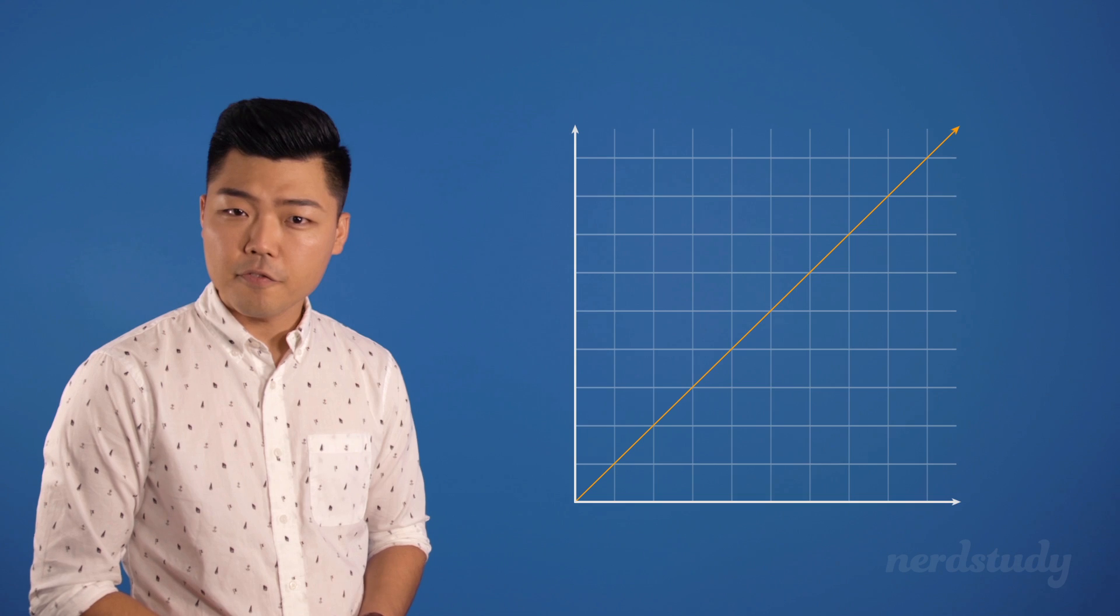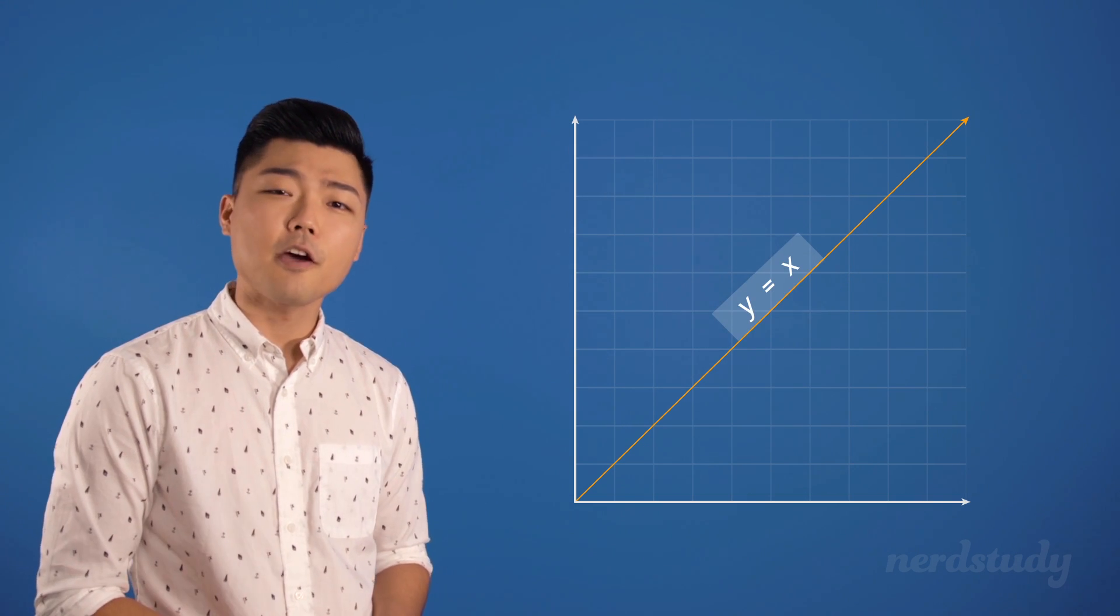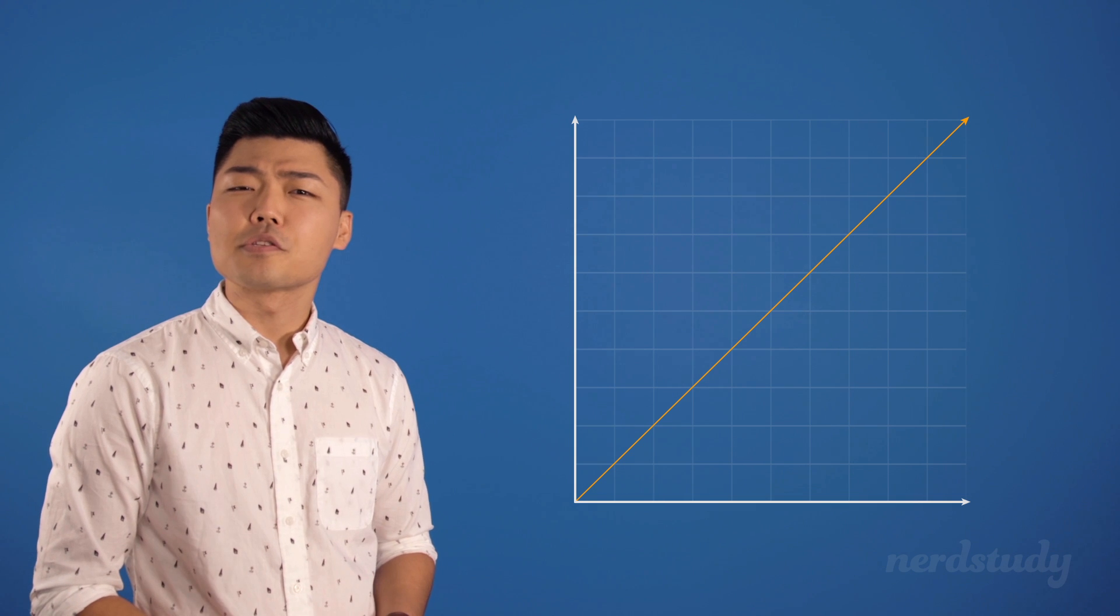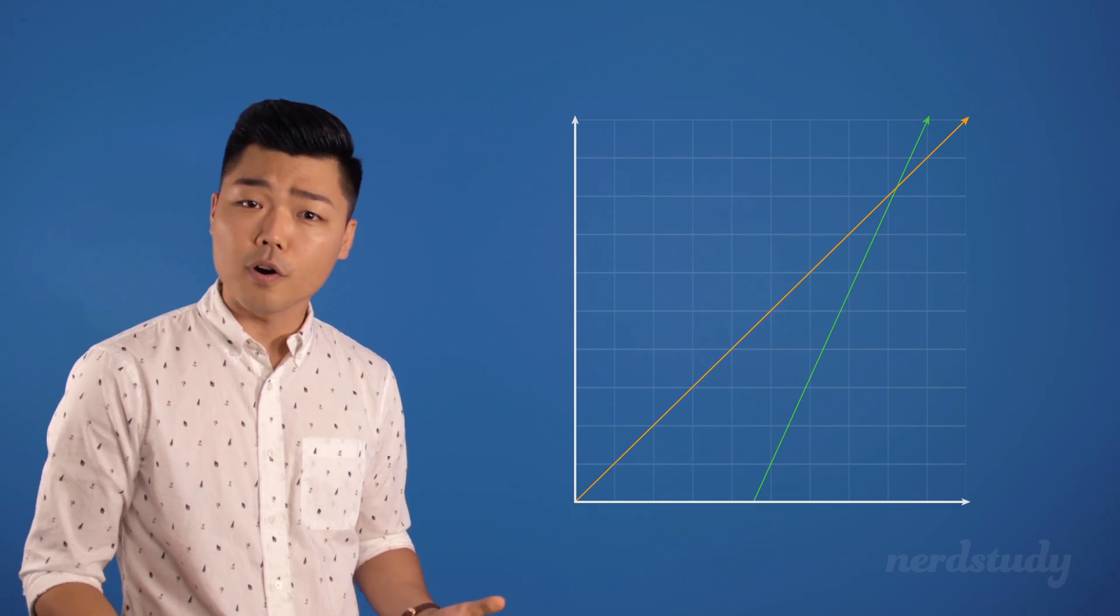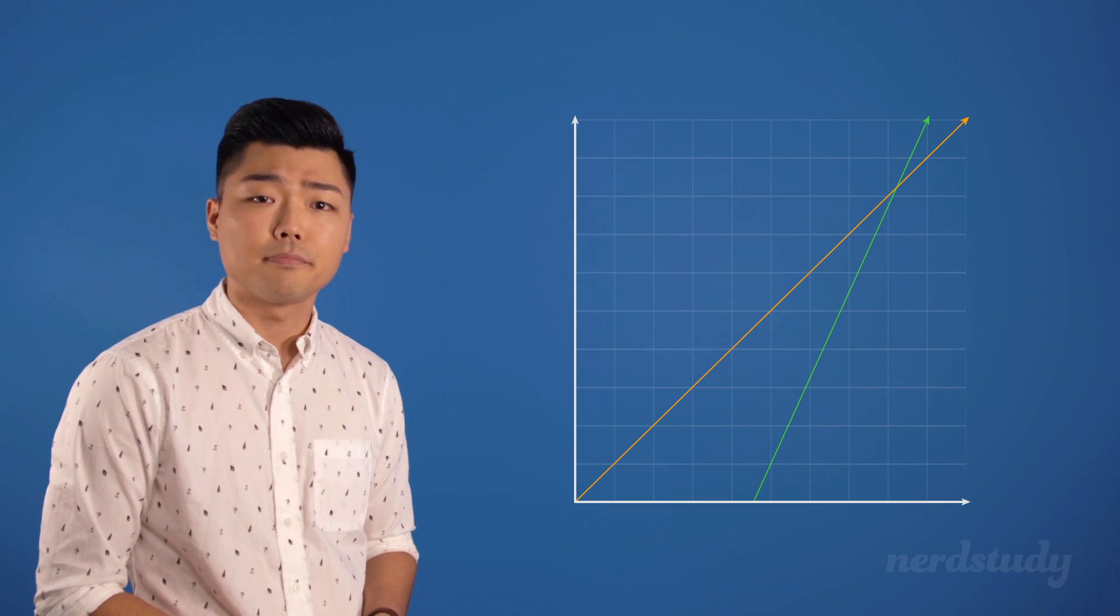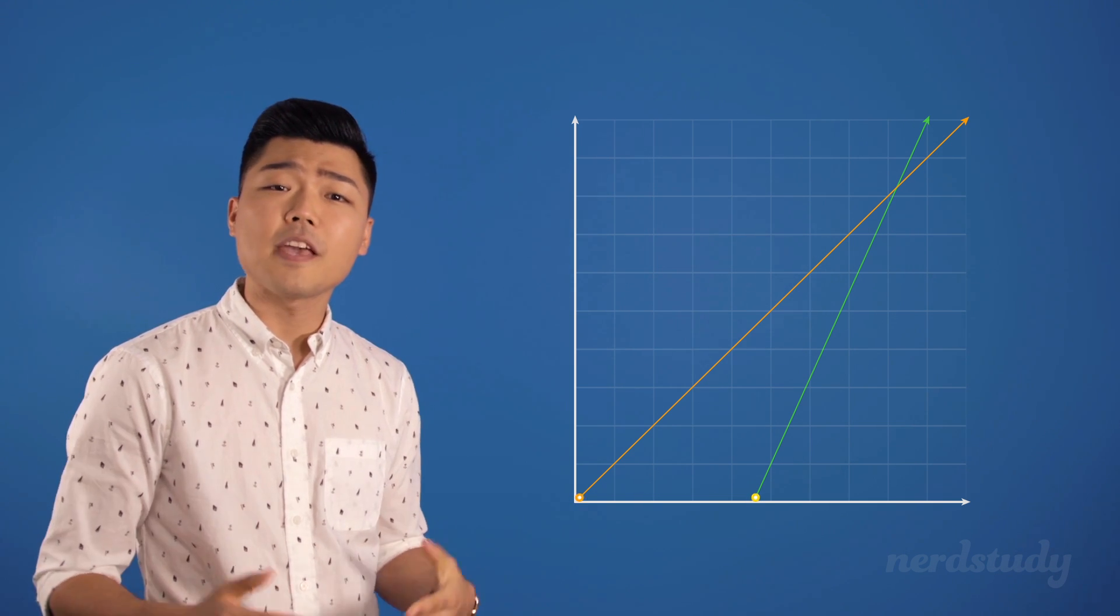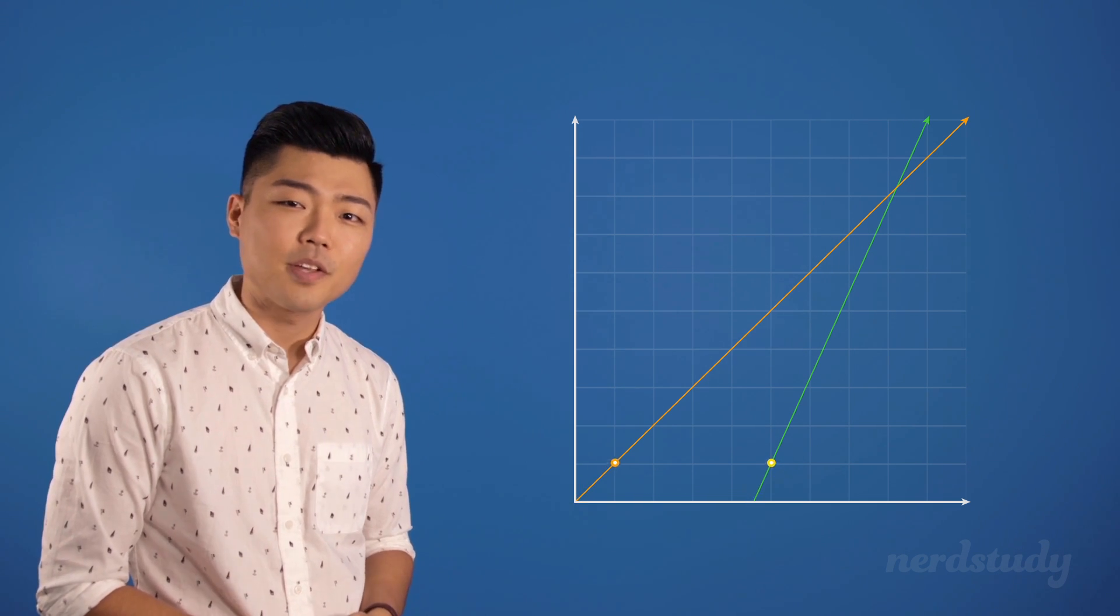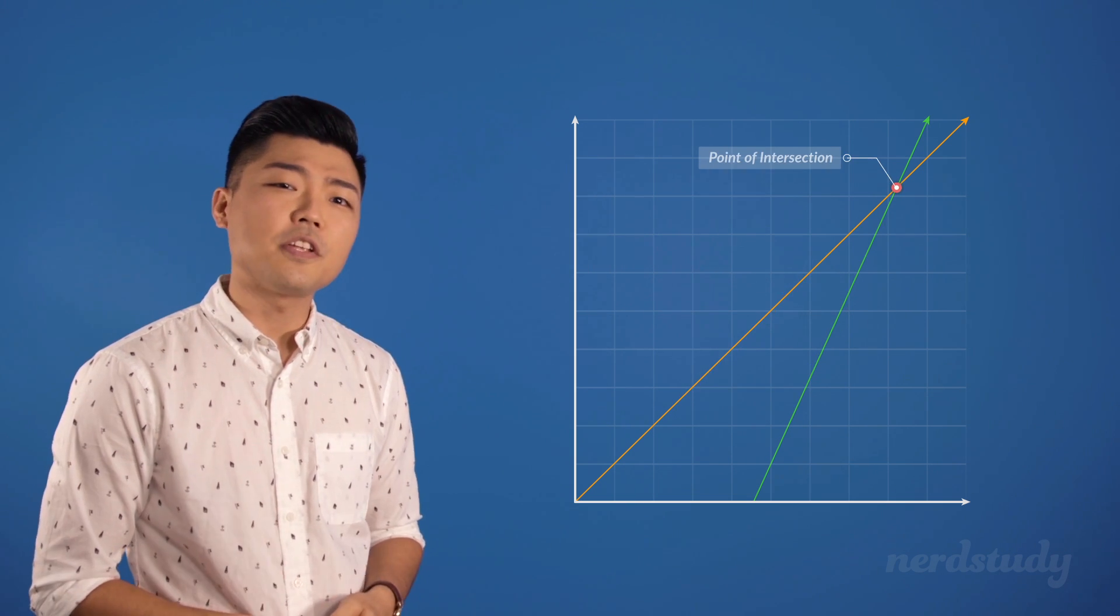By now, we already know that all lines on a graph have their equivalent linear equations as counterparts. What happens when we have two lines that are not parallel with each other, or that do not have the same slope? Well, since the slopes differ, it's only a matter of time before they end up crossing each other. When they do cross each other, we call this a point of intersection.